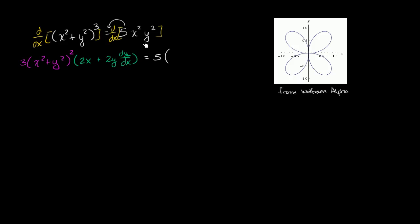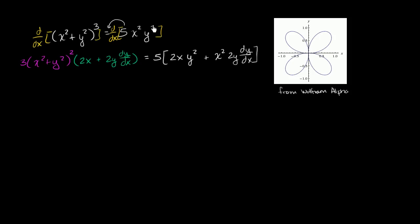Now we can apply the product rule. It's going to be 5 times the derivative of x², which is 2x, times y² — that's the derivative of the first function times the second function — plus the first function, x², times the derivative of the second function. The derivative of y² with respect to x is the derivative of y² with respect to y, which is 2y, times the derivative of y with respect to x. That's the chain rule applied here.